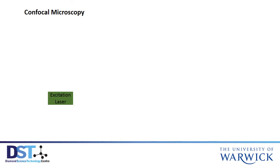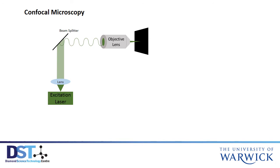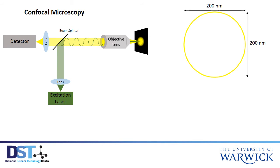Using a confocal microscope, this excitation laser light is focused onto a point. The beam splitter splits the light by transmitting some and reflecting the rest. Any molecules with a fluorophore in that spot area will emit light, which is observed. However, there is a problem in that the spot size at best is 200 nanometres, but molecules are about 10 nanometres in size.